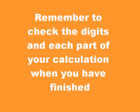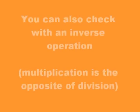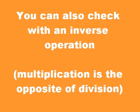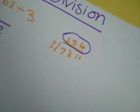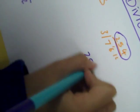To check, you have to do the inverse operation, which is multiplying. And the sum is 254 times 3.